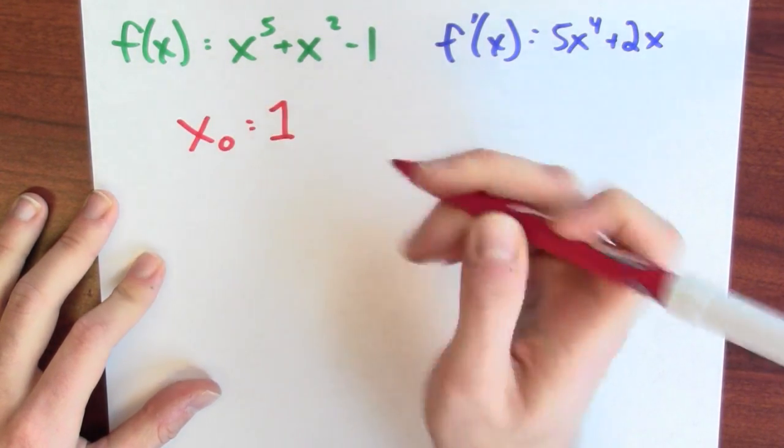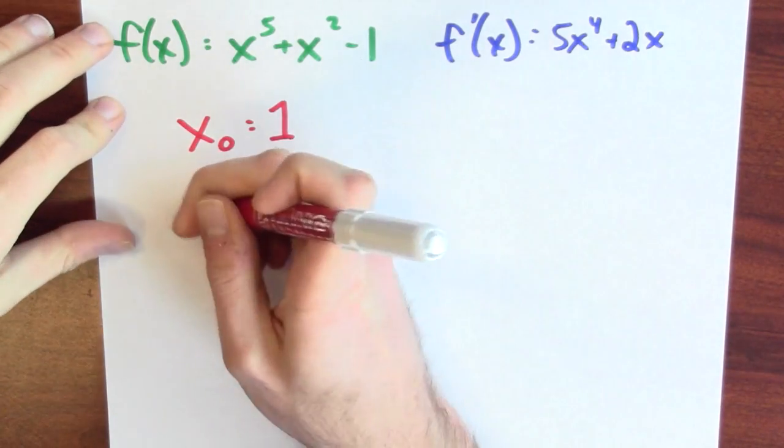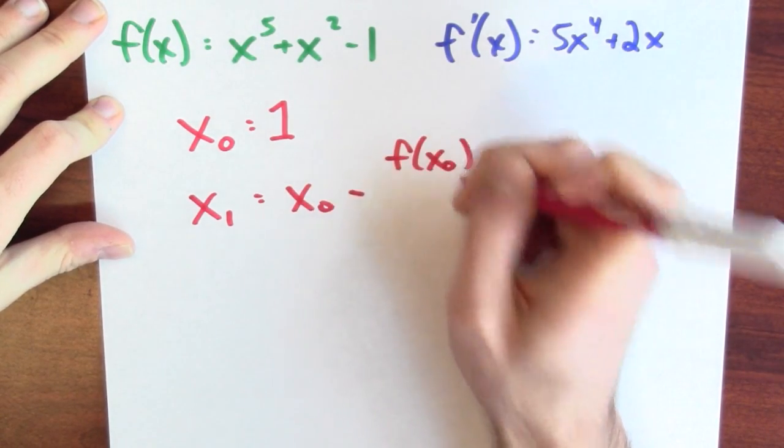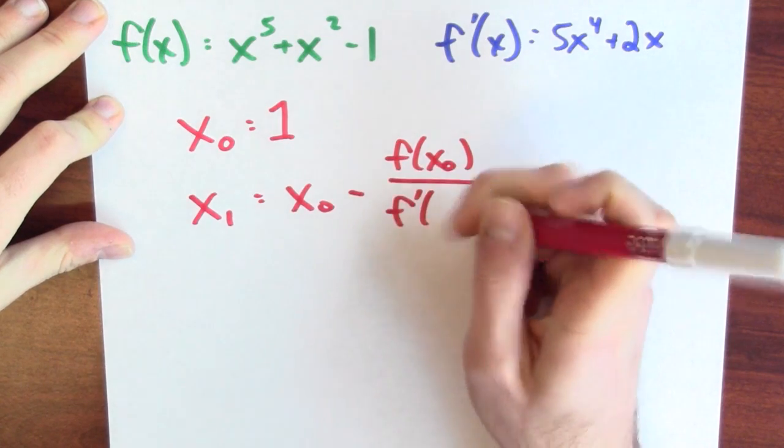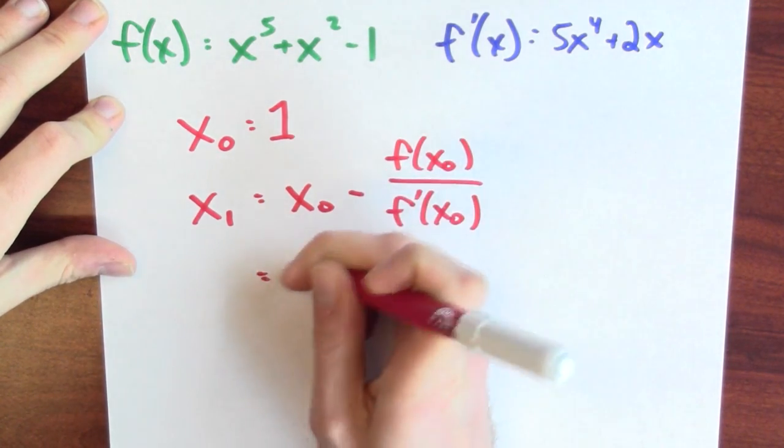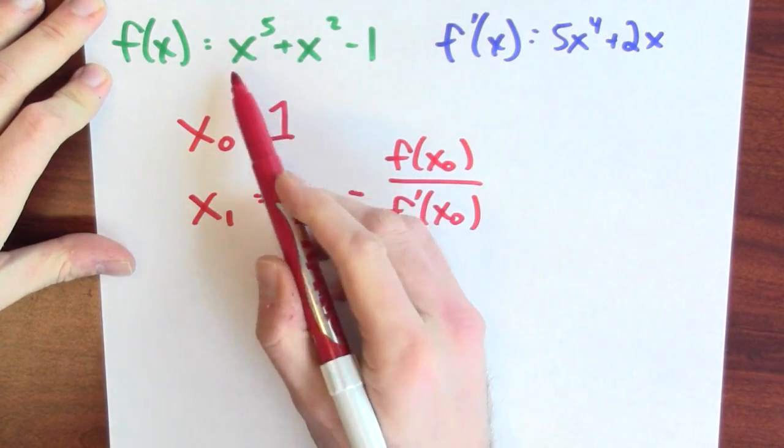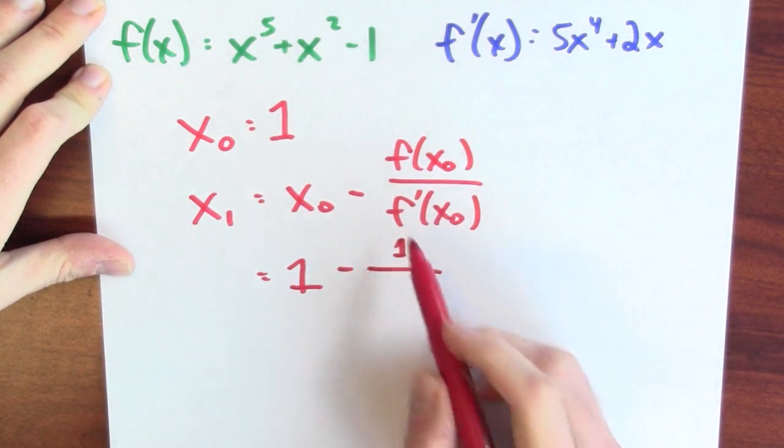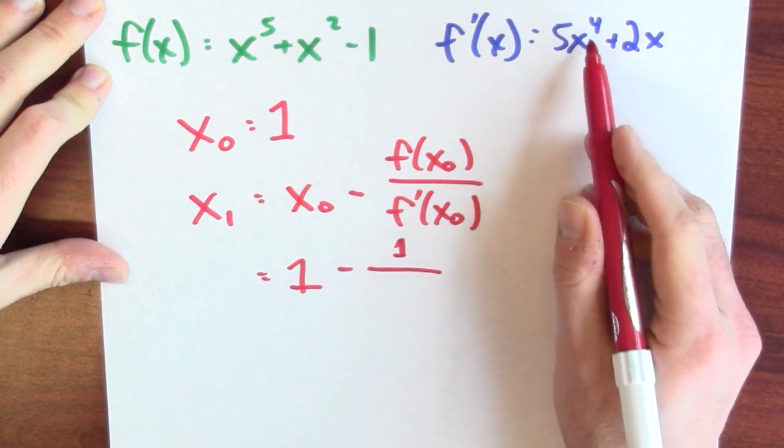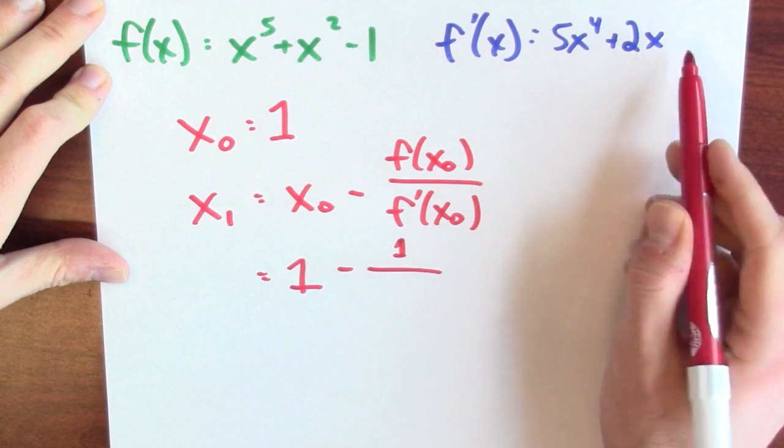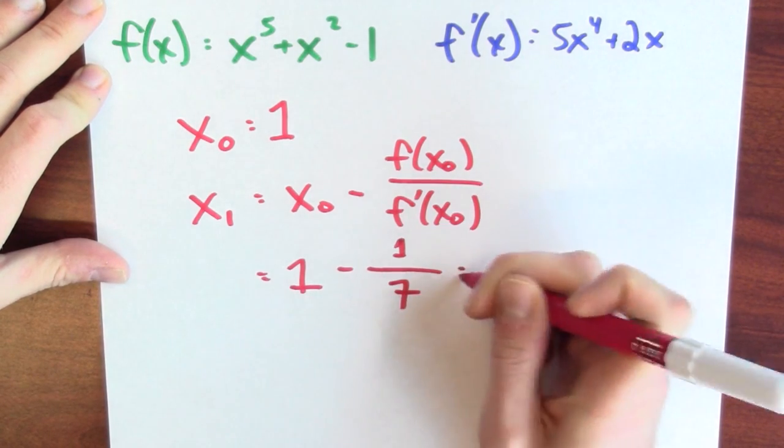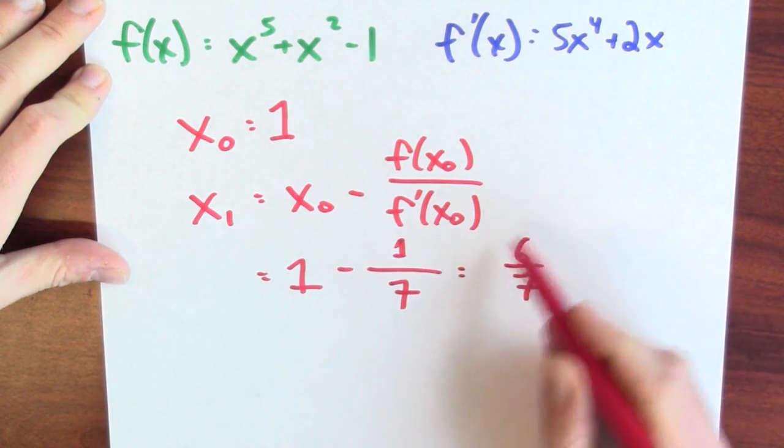My first guess will be 1. So I've made my initial guess. What's my next guess? So my next guess, according to Newton's method, I'll call that x sub 1, will be my old guess minus the function's value at my old guess divided by the function's derivative at my old guess. Now, my old guess is 1. The function's value at 1, that's 1 to the fifth plus 1 squared minus 1, that's 1 plus 1 minus 1, that's 1. And the derivative at 1, well, that's 5 times 1 to the fourth plus 2 times 1. That's 5 plus 2, that's 7. So my new guess is 1 minus 1 over 7. That's 6 sevenths.